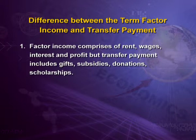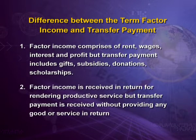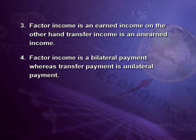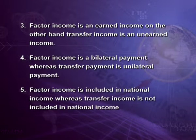Now it is time to understand the difference between factor income and transfer payment. Factor income comprises rent, wages, interest, and profit. Transfer payment includes gifts, subsidies, donations, scholarships, etc. Factor income is received in return for rendering productive services, whereas transfer payment is received without providing any good or service in return. Factor income is an earned income, while transfer income is an unearned income. Factor income is a bilateral payment, whereas transfer payment is a unilateral payment. Factor income is included in national income, whereas transfer income is not included in national income.